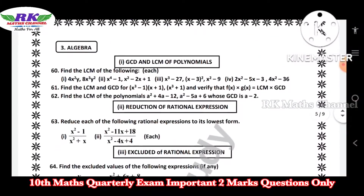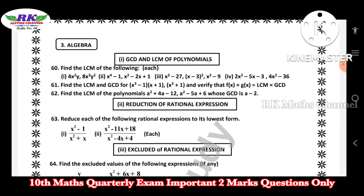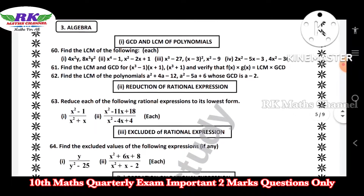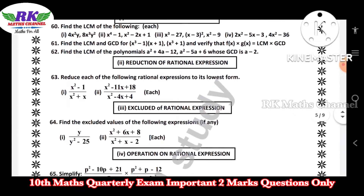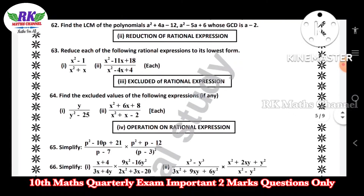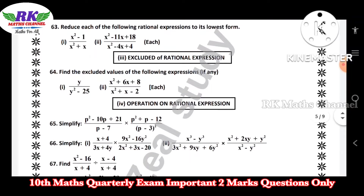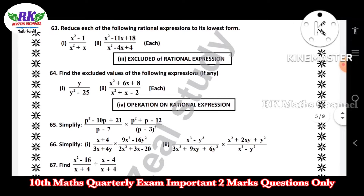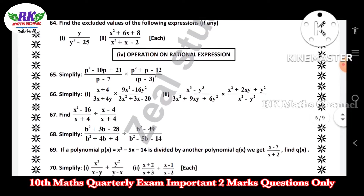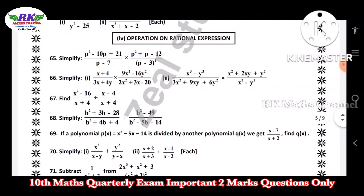Next, third unit is algebra. GCD and LCM of polynomials. Next, reduction of rational expressions — I think that is example problem 3.13. Next, exclusion of rational expressions — important. Next, operations on rational expressions — operations on factors: divide and cancel.